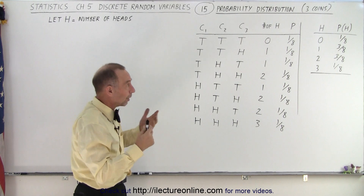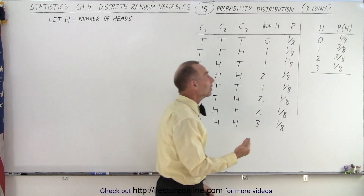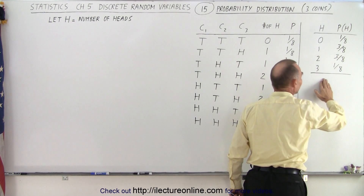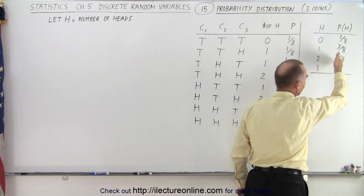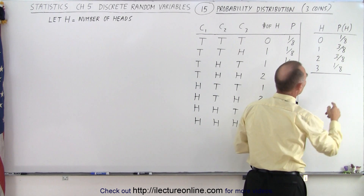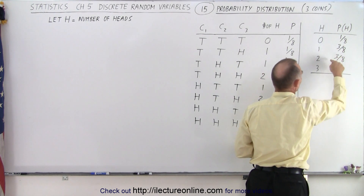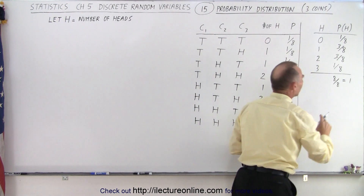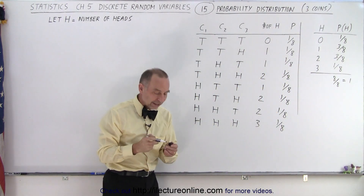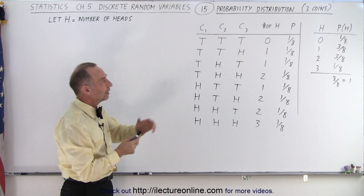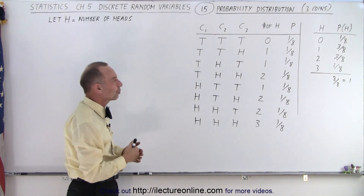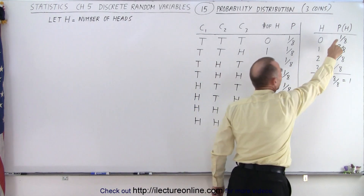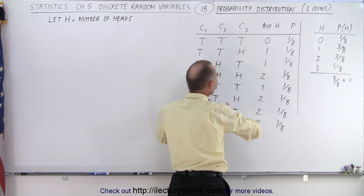Now let's see if we have a proper probability distribution. We have to satisfy two properties. The first property is that all of these probability values are not less than zero and not more than one — and that is satisfied. Then when we add them all up, one plus three plus three plus one equals eight over eight, which equals one. All the probabilities added together should always equal one, and in this case they do, so we do have a proper probability distribution.